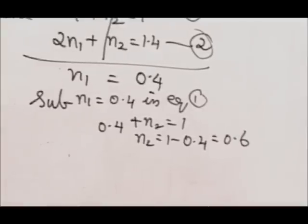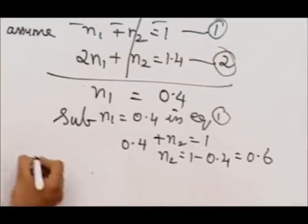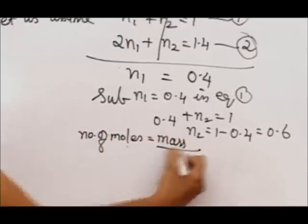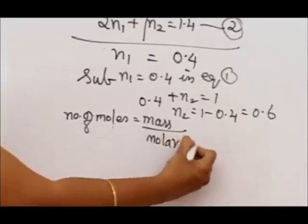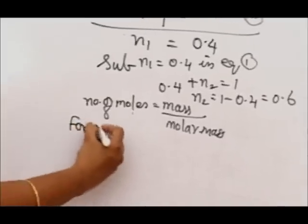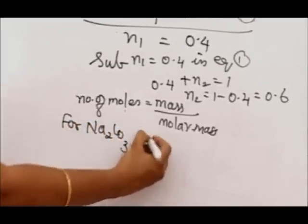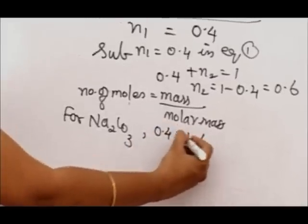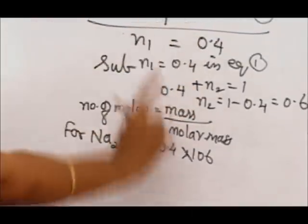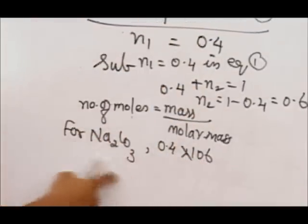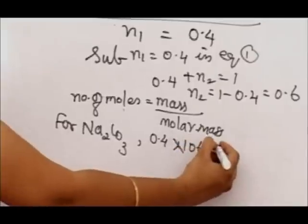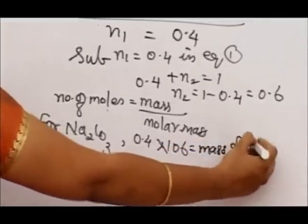We have the formula: number of moles equals mass divided by molar mass. For Na₂CO₃, it is 0.4 times 106. Why 0.4? We just found the number of moles of Na₂CO₃ is 0.4. Why 106? Na₂CO₃ weight is 106. So 0.4 times 106, which is the mass of Na₂CO₃.